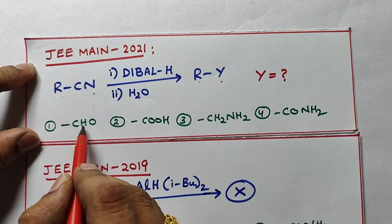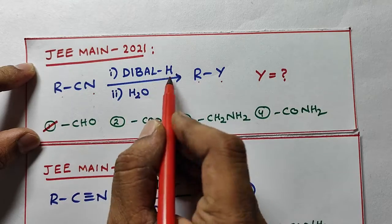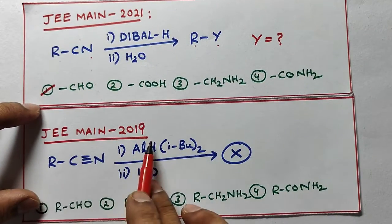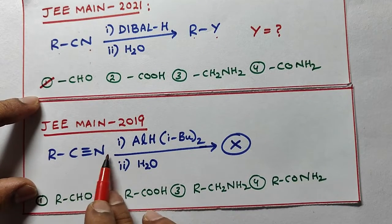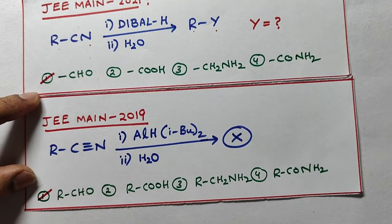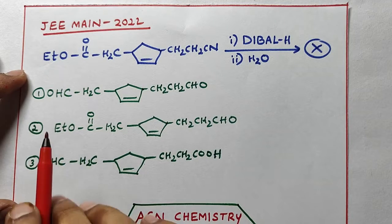Next 2019 question. Even this is also same, CN is converted into CHO. So that is the answer.